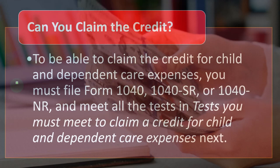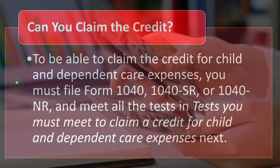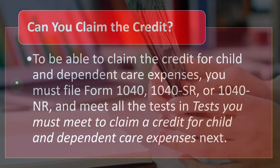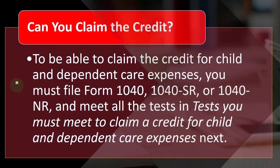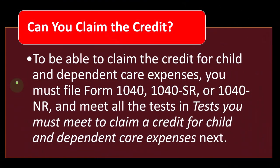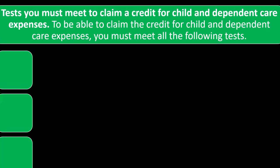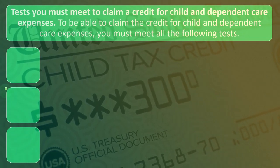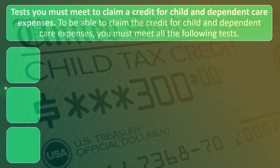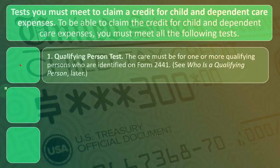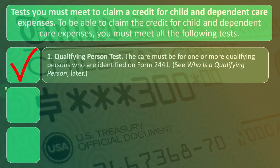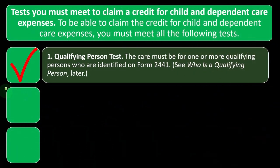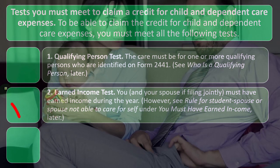To claim the credit for child and dependent care expenses, you must file Form 1040, 1040-SR, or 1040-NR and meet all the required tests. The first test is the qualifying person test: the care must be for one or more qualifying persons who are identified on Form 2441.